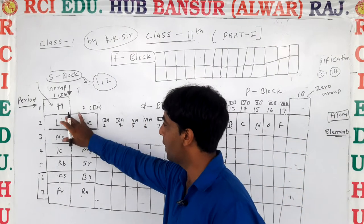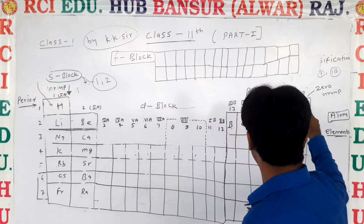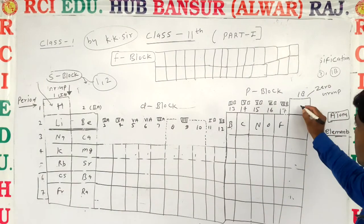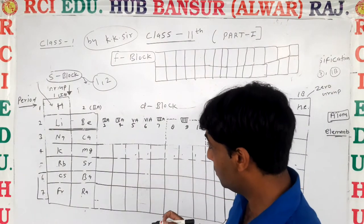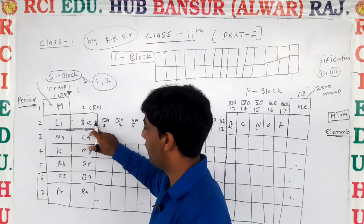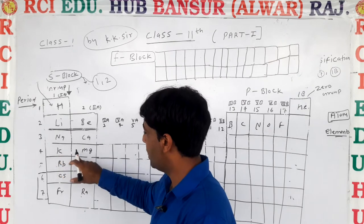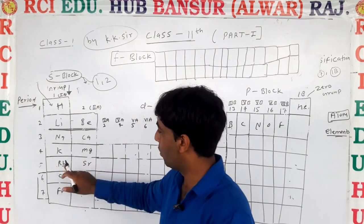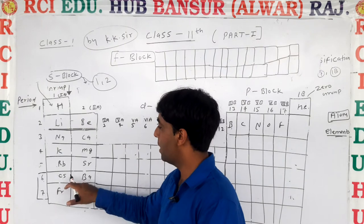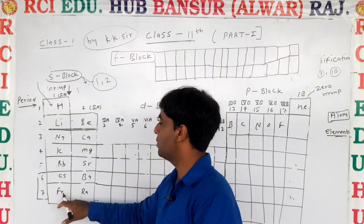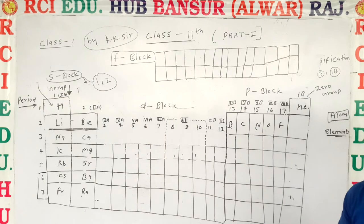In S block, you can represent: hydrogen, helium (which goes in P block), lithium, beryllium, sodium, calcium, potassium, magnesium, rubidium, strontium, cesium, barium, francium, and radium.